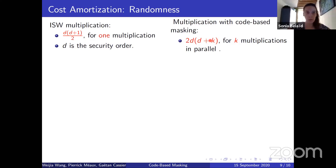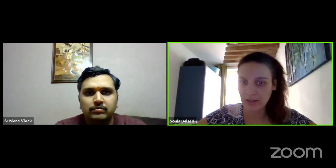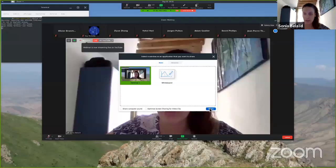Thank you, Guijia. We will now move to the second talk of the session: a talk on countermeasure dissection and the limits of closed-source security evaluations, from Olivier Branchant and François-Xavier Standert. Olivier will give the talk.